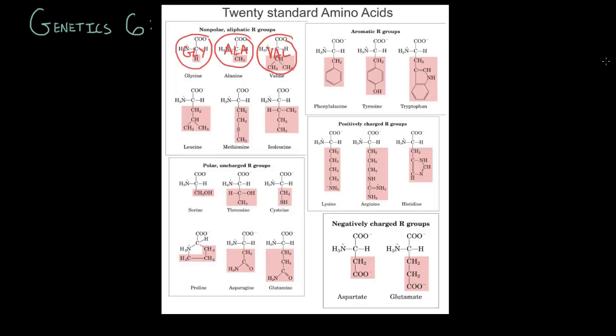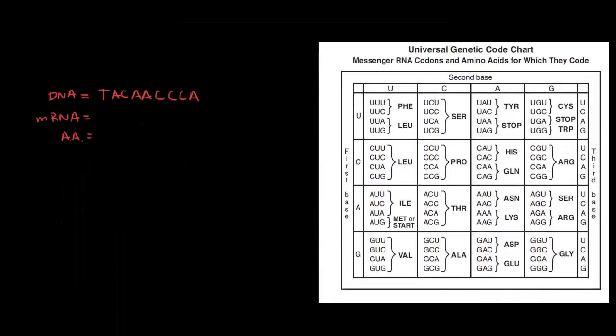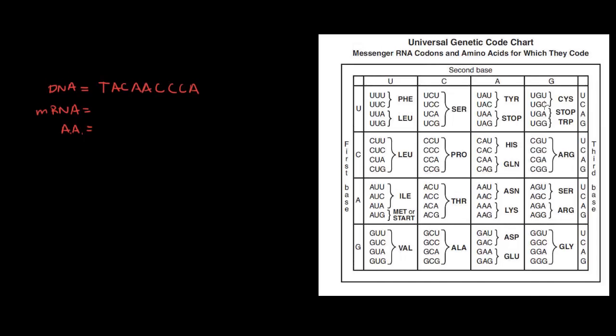Let's head down to the real chart, the universal genetic code chart. And here it is on the right, the universal genetic code chart. Universal because this works for any living thing. All living things have ribosomes and they all build proteins.